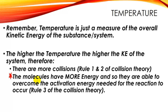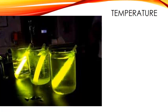So temperature satisfies not just rules one and two of collision theory — like concentration and surface area — but also helps overcome the activation energy, which is rule three. That's why temperature always plays such a big role. Think back to why food spoils faster left on the counter versus in the fridge.